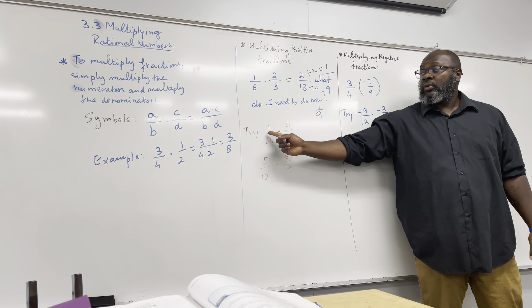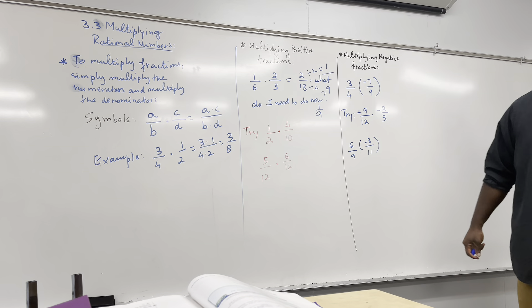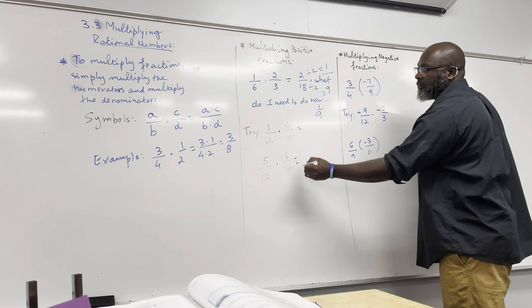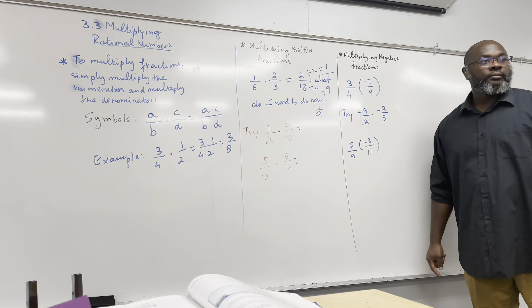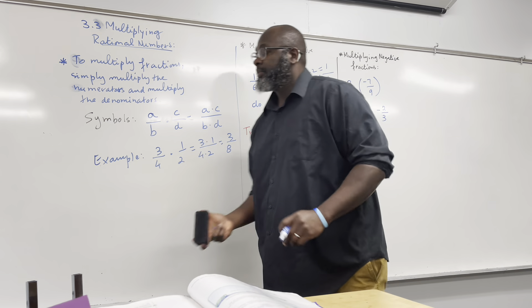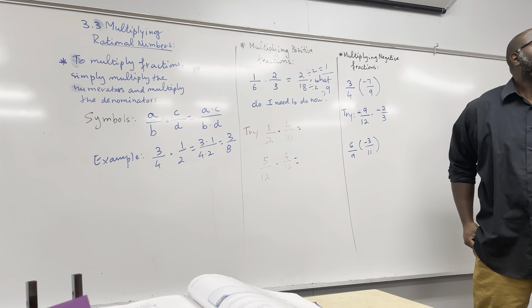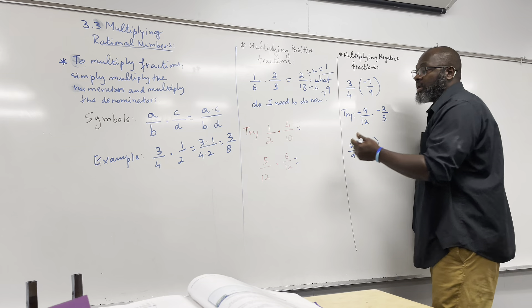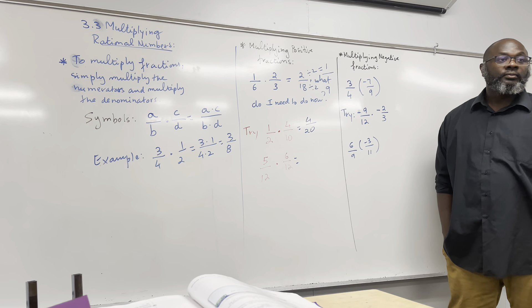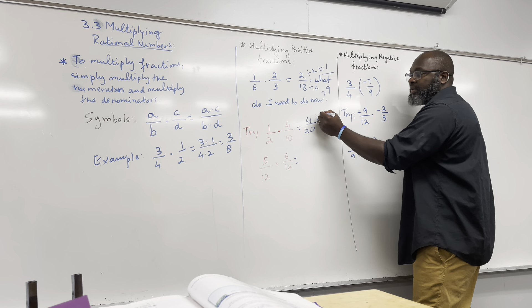Make sure you write this down because it's going to help you, especially when we get to simplifying fractions. For example, three over four times one over two becomes three times one over four times two, which is three over eight. This is how you multiply a fraction — multiply the denominators together and the numerators together.